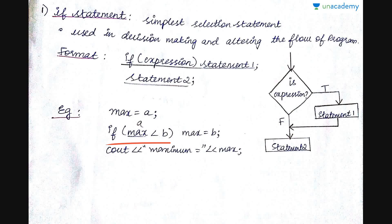Let us see an example: max equals a. If max is less than b — initially you assume a is the maximum of two numbers. If max is less than b and that is true, then obviously the maximum will be b, so you assign max equals b. Otherwise max already holds the value of a. Then you print 'maximum equals max'. The cout statement is the default statement two, so it prints whether the condition was true or false.